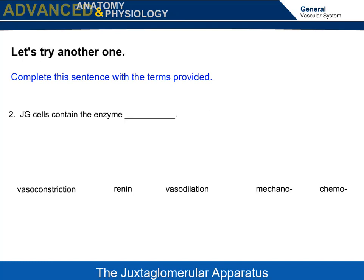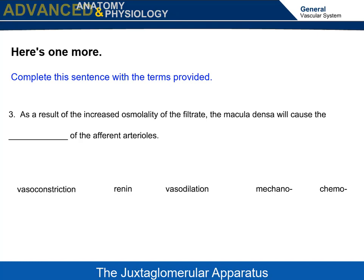Let's try another one: JG cells contain the enzyme blank. Answer: JG cells contain the enzyme renin. Here's one more: as a result of the increased osmolality of the filtrate, the macula densa will cause the blank of the afferent arterioles. Answer: vasoconstriction of the afferent arterioles.